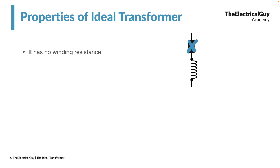Since there is no winding resistance in the ideal transformer, there is no question of I²R losses either. If R is zero, then the loss will also be zero. And since there is no loss, there will be no heat generated and no need for cooling the transformer. In a practical transformer, internal resistance produces I²R losses which cause heating and require cooling mechanisms. But in the ideal transformer, none of these things happen.